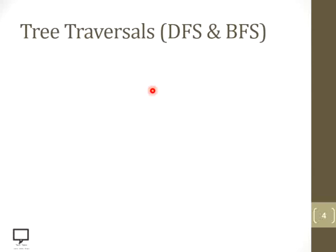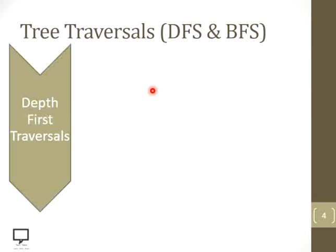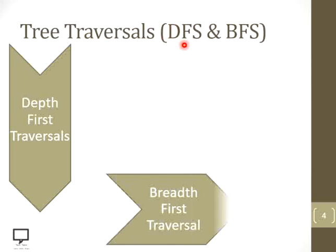First of all, we will see what different tree traversal techniques are there. There are two separate traversal techniques, basically tree traversal or non-linear data structure traversal techniques. The first one is depth first traversal technique which is called DFS, and another one is breadth first traversal technique which is called BFS.